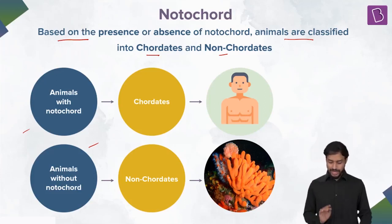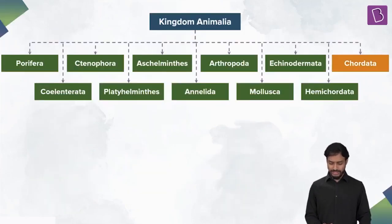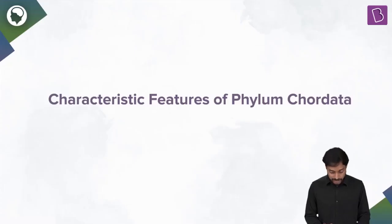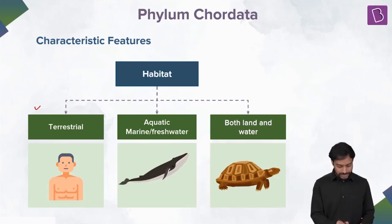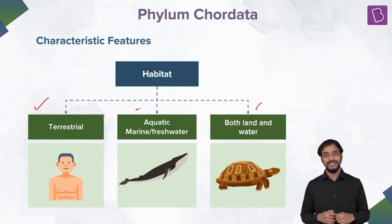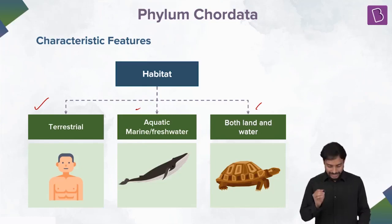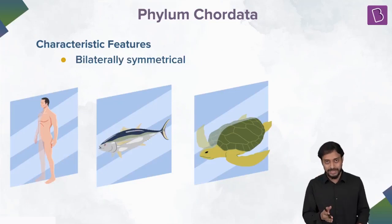Now let's talk about the characteristic features of phylum Chordata. First, habitat: where are they found? They are terrestrial, aquatic, marine, and freshwater. Amphibians, for example, can live on land as well as in water. Talking about symmetry, chordates are bilaterally symmetrical — there is only one plane along which, if we cut, we get equal halves.